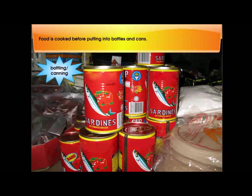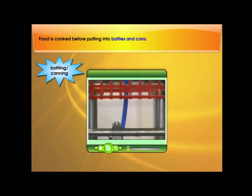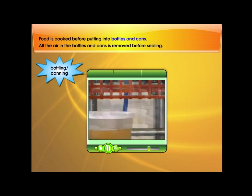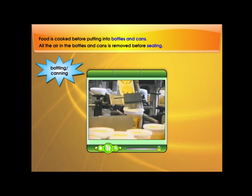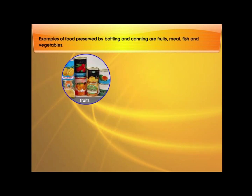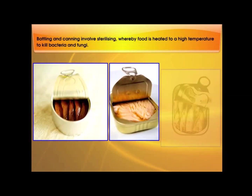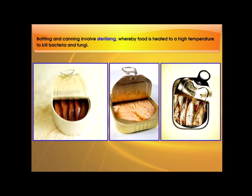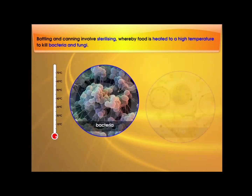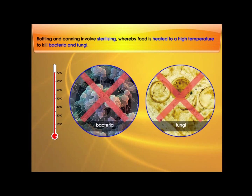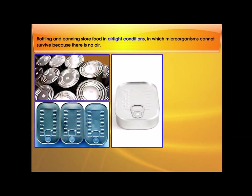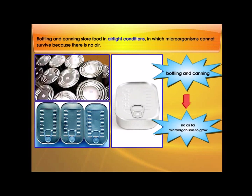Food is cooked before putting into bottles and cans. All the air in the bottles and cans is removed before sealing. Examples of food preserved by bottling and canning are fruits, meat, fish, and vegetables. Bottling and canning involve sterilizing, whereby food is heated to a high temperature to kill bacteria and fungi. They store food in airtight conditions in which microorganisms cannot survive, because there is no air.